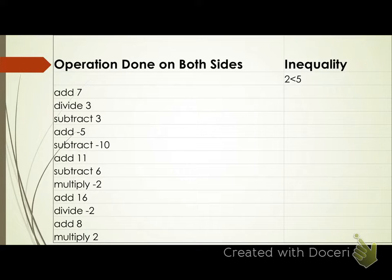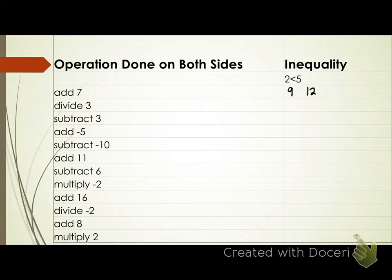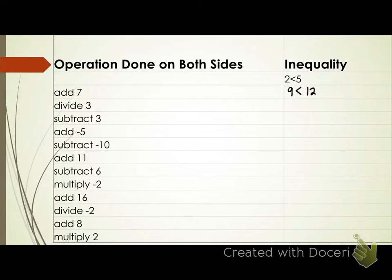First line: add seven. What's two plus seven? Nine. What's five plus seven? Twelve. Is nine less than twelve or greater than twelve? Less than. Nine is less than twelve — it's smaller than twelve. Everyone agree with that?